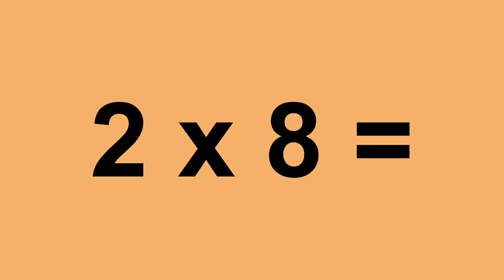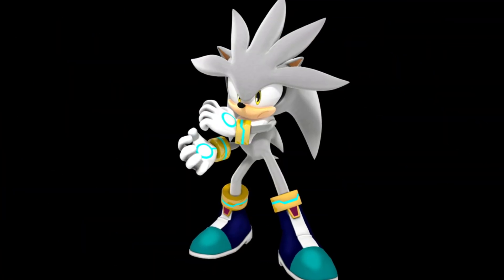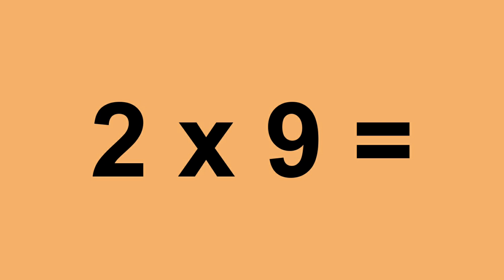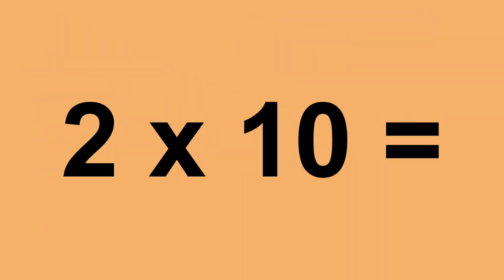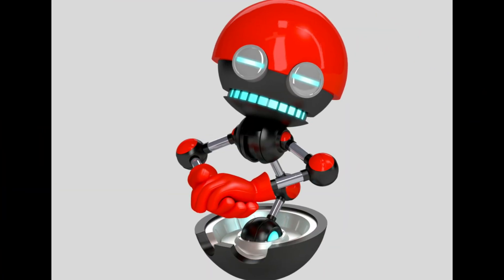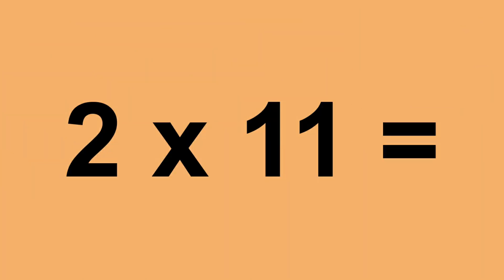Two times eight equals sixteen. Two times nine equals eighteen. Two times ten equals twenty. Two times eleven equals twenty-two.